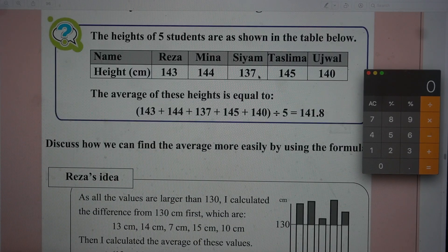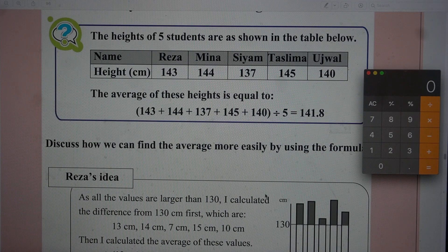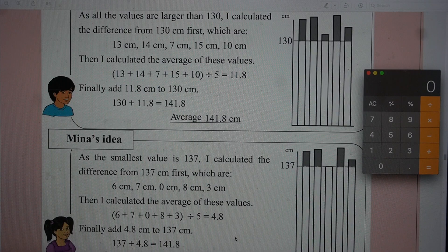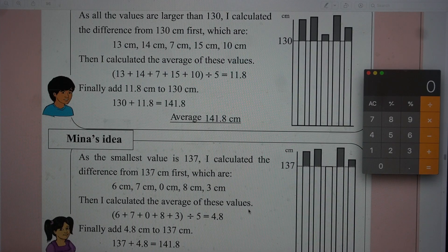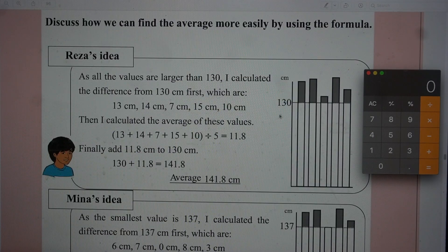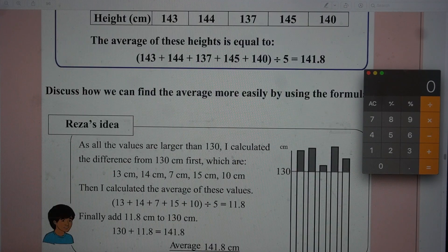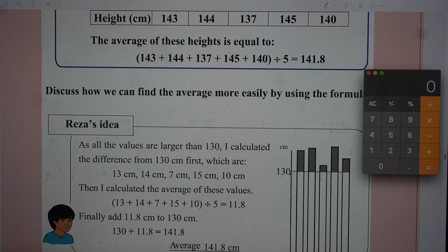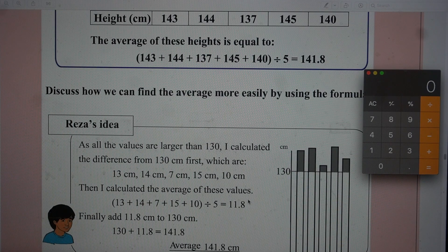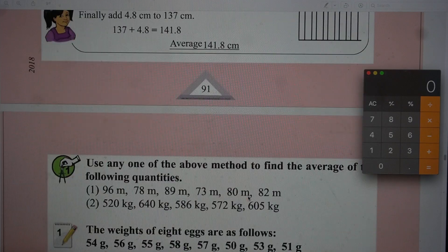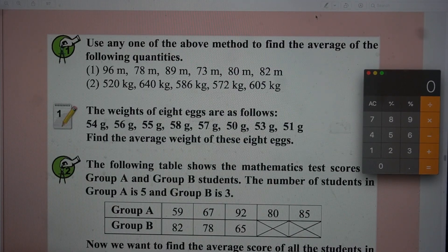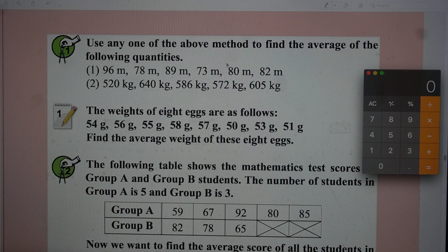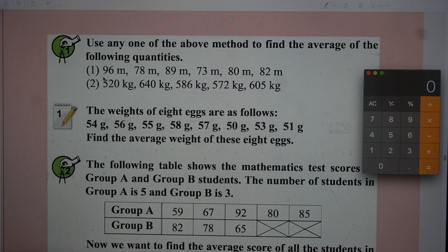Otherwise, you can take 137 as well, the lowest number also. You can proceed in a similar way to find the average. Whichever you feel comfortable, you can proceed with. I prefer 130 because subtracting from these numbers would be easier when you have 0 at the last. So any one of the methods we need to use to find the average. We have seen two methods.